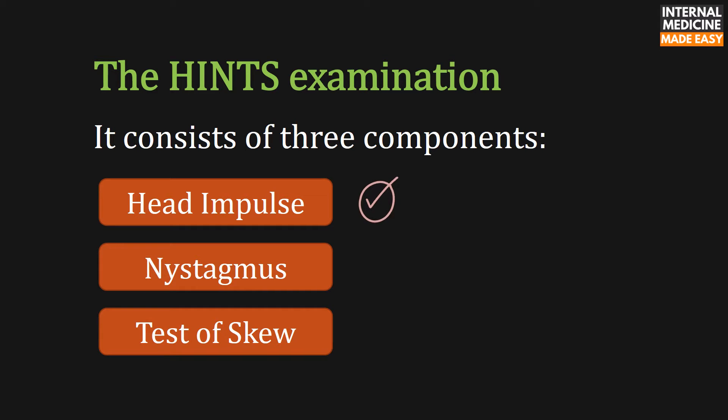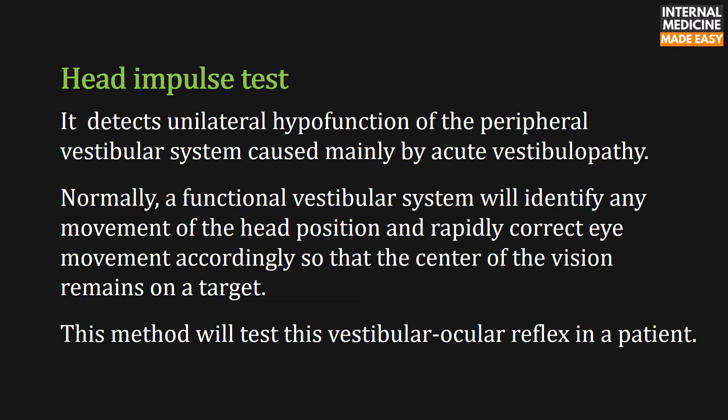The head impulse test detects unilateral hypofunction of the peripheral vestibular system, caused mainly by acute vestibulopathy. Normally, a functional vestibular system will identify any movement of the head position and rapidly correct eye movement accordingly, so that the center of vision remains on a target. This method tests the vestibulo-ocular reflex in a patient.